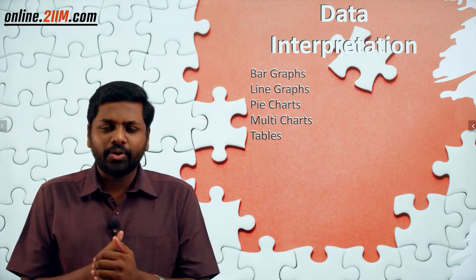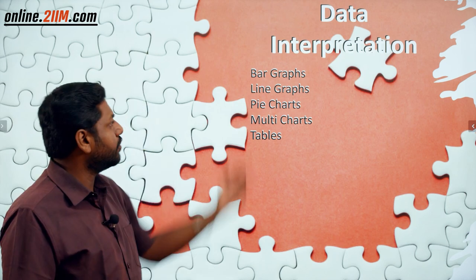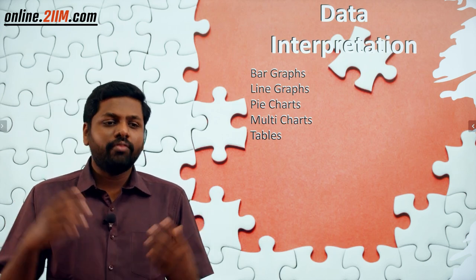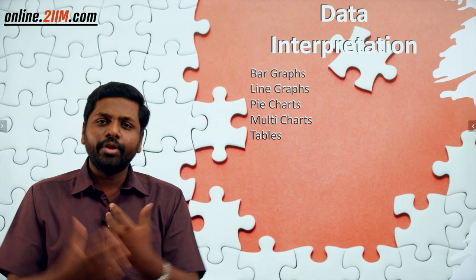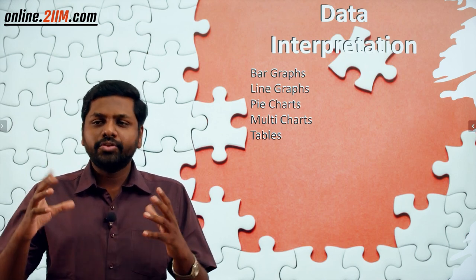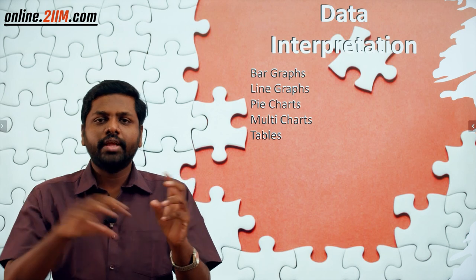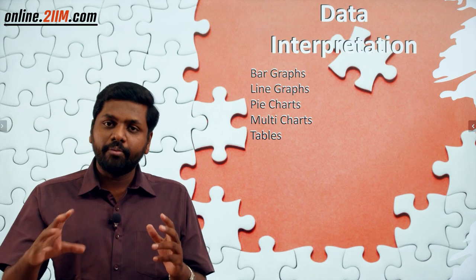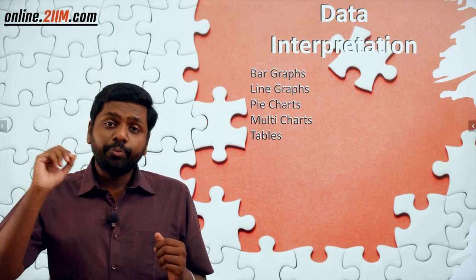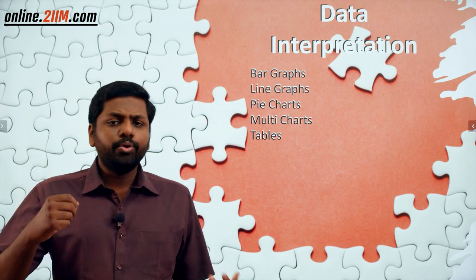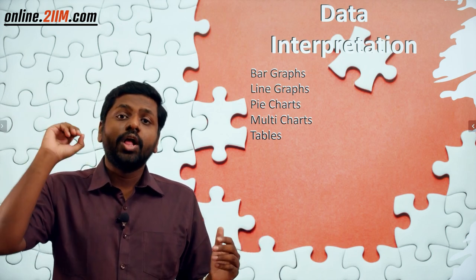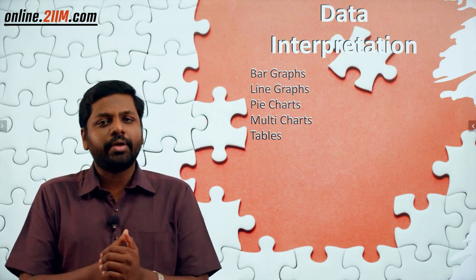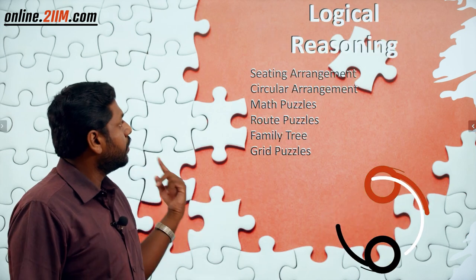Before that, Data Interpretation constituted all of bar graphs, line graphs, pie charts, multi charts, and tables. You could be given one, two, or a combination of these, or tables where four rows of data are given with some data missing, and you fill in the table using additional information. It was heavy-duty computing — you'd compute and fill paper after paper, calculating things. That was how Data Interpretation was three to five years ago.